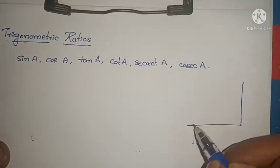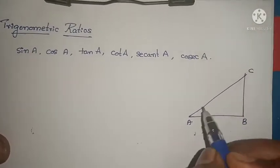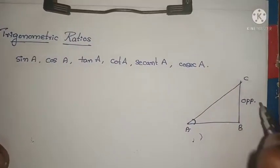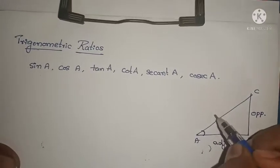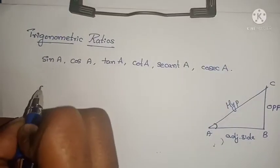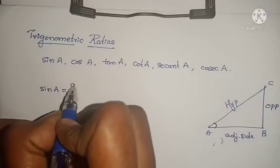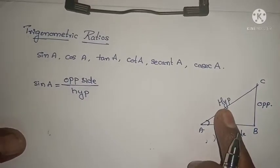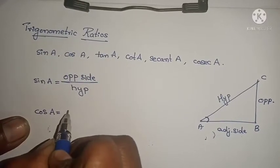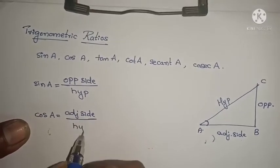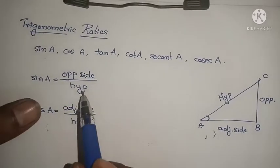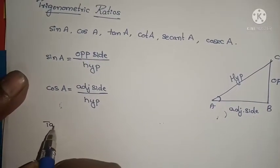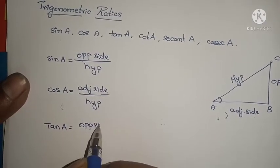Let us consider one right angled triangle ABC. If I take the angle here, it is called angle A. For this angle, this is the opposite side, this is the adjacent side, and AC is called the hypotenuse. Sin A equals opposite side by hypotenuse. Cos A equals adjacent side by hypotenuse. Both sin and cos have hypotenuse as the denominator. Tan A equals opposite side by adjacent side.